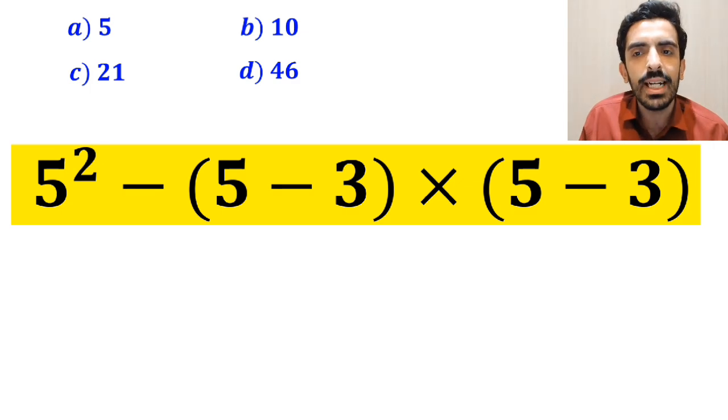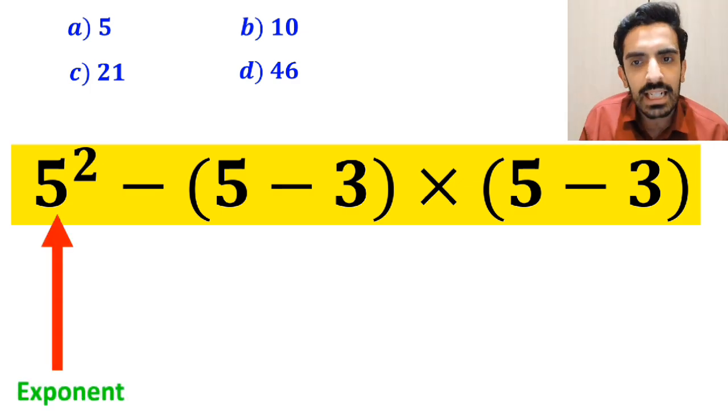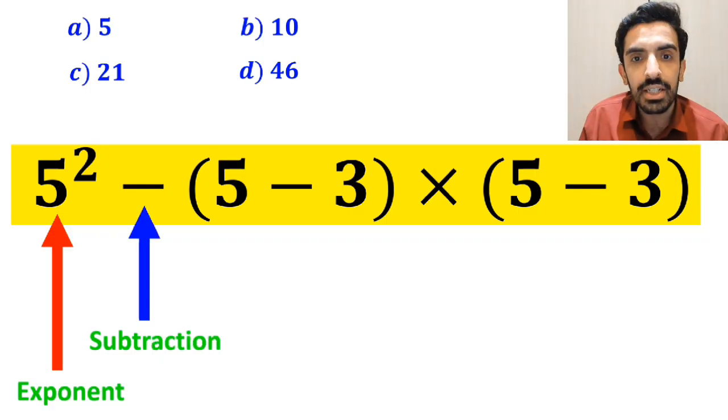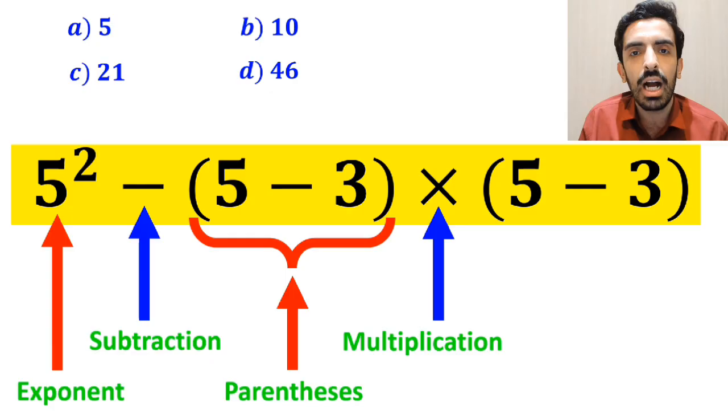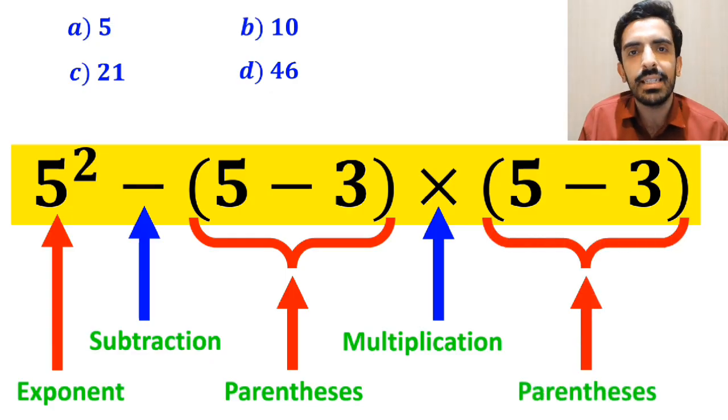As you can see on the screen, in this expression, first we have an exponent, then a subtraction sign, and after that parenthesis, followed by a multiplication sign, and finally another parenthesis.